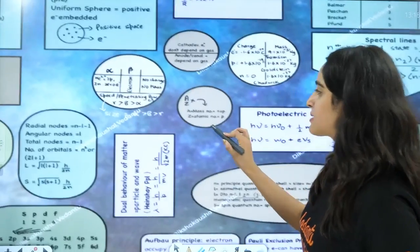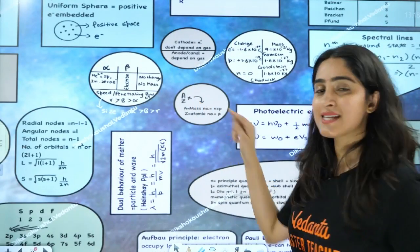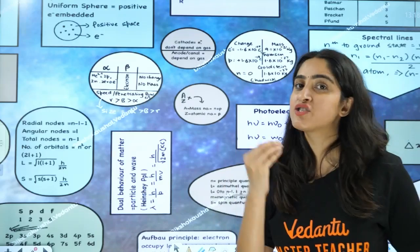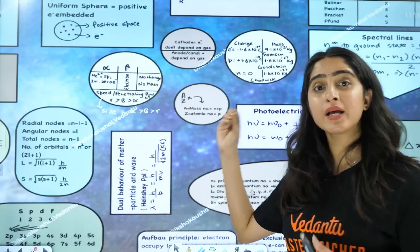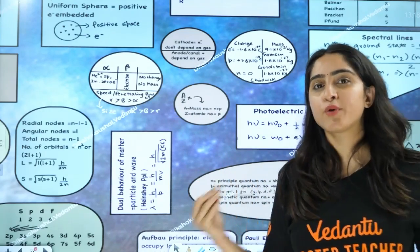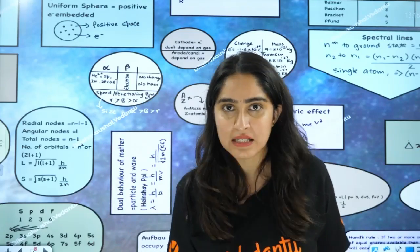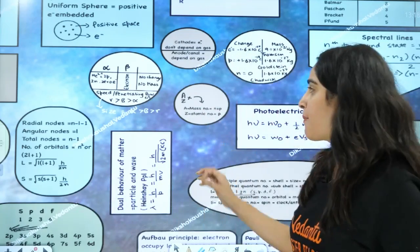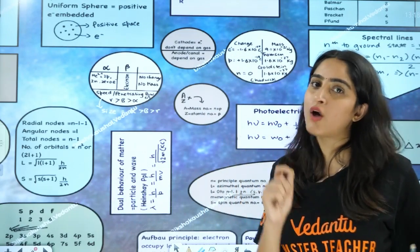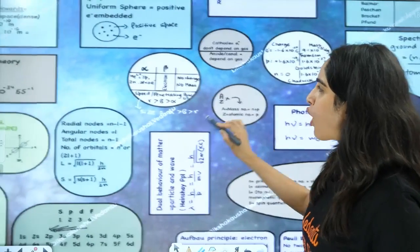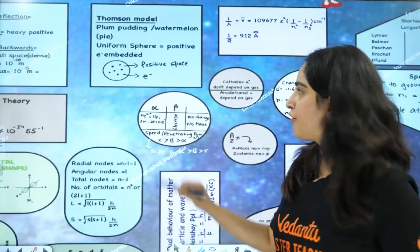Next is the atomic notation: E, X, Z. X is the element, A is the mass number, Z is the atomic number. Atomic number is equal to the number of protons or the number of electrons in a neutral atom. Mass number A is equal to neutrons plus protons.